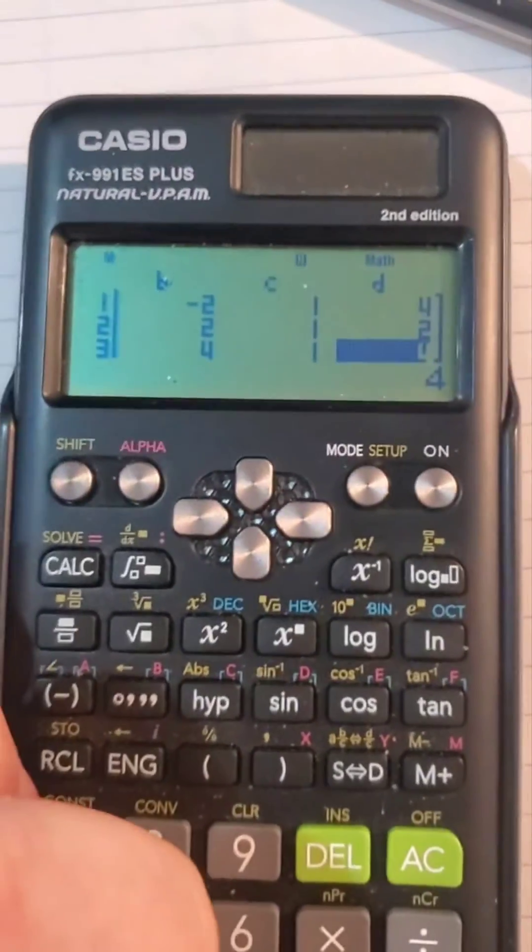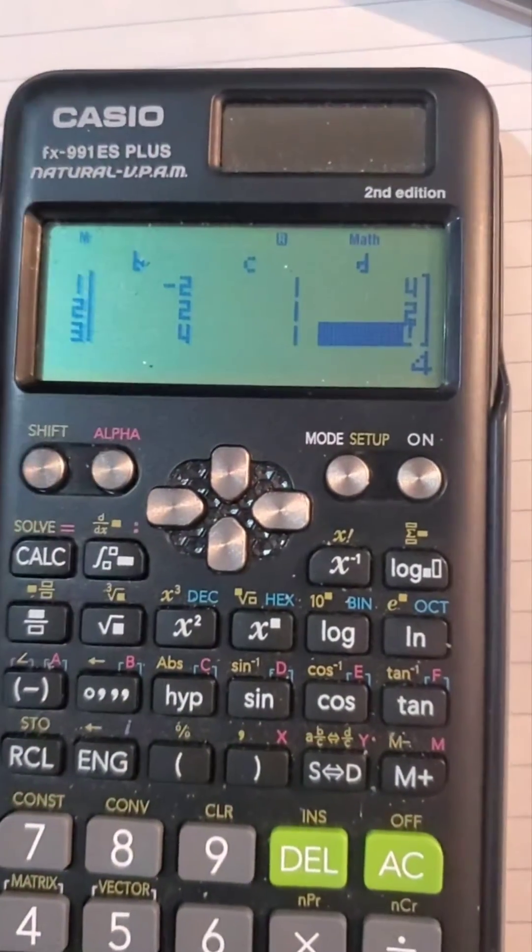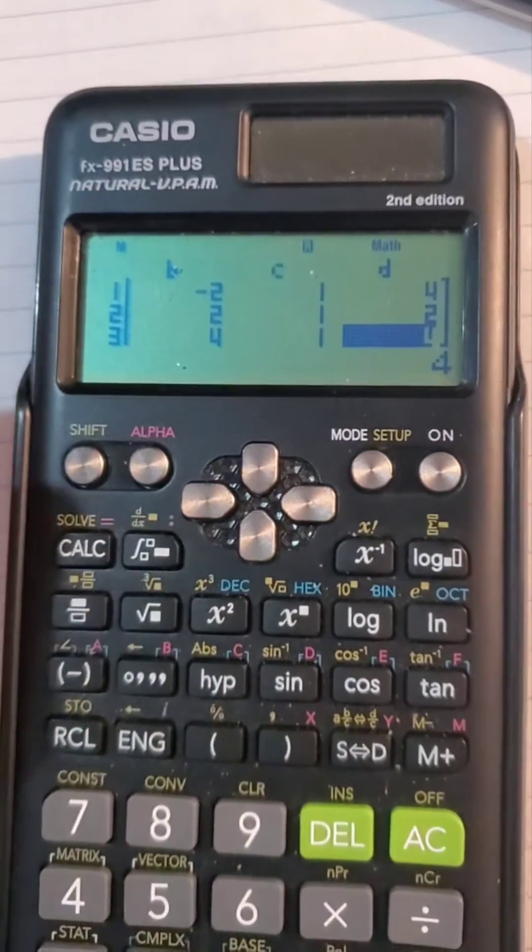And now we hit enter and we'll get the answers. This will be the rightmost column in the matrix, and the rest will be reduced to row echelon, meaning 1, 0, 0, 0, 1, 0, 0, 0.